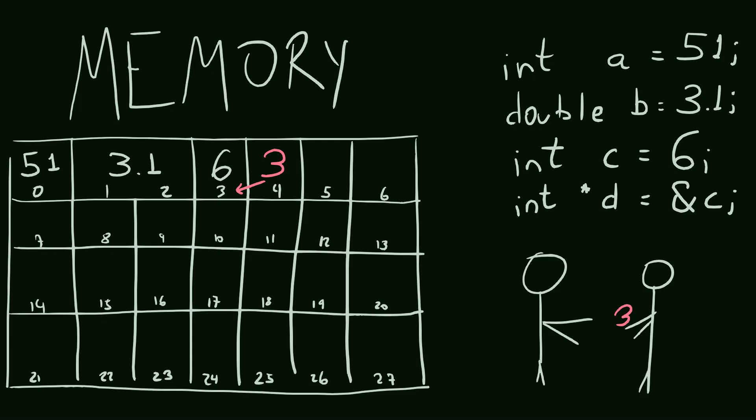Whenever we pass a pointer around to a function, like we're going to do in this case, we are passing some information that the function can use to go to the specific locker we are storing in our window class, and read it, or even change it.